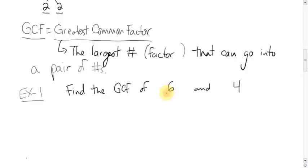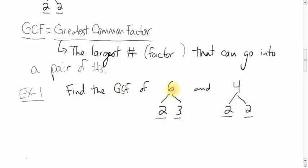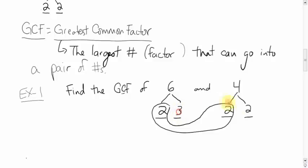Find the greatest common factor of 6 and 4. First, factor each number: 6 is 2 times 3; 4 is 2 times 2. Now we play a game — like go fish. The 6 says 'I have a 2,' and the 4 says 'so do I.' The 6 says 'I have a 3,' and the 4 says 'I don't.' The biggest common factor they share is 2. So the GCF is 2, whether you get that through common sense or the factor tree.